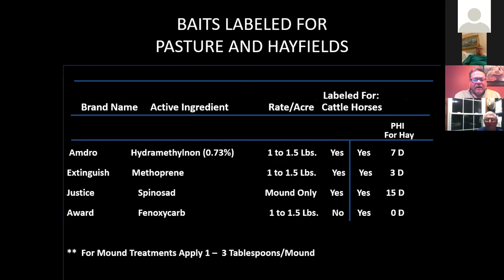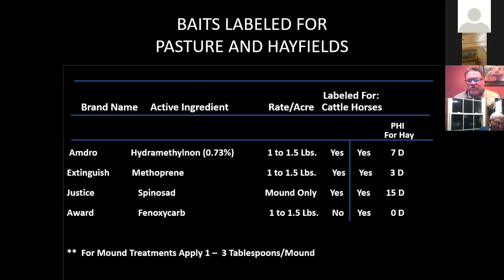Products labeled for pastures and hay fields include Amdro, Extinguish, Justice, and Award. Post-harvest intervals: Amdro is seven days, Extinguish is three days, Justice is 15 days, and there is no post-harvest interval on Award. Those products are not cheap, so you want to be efficient and effective when you make your applications so you're not wasting money.